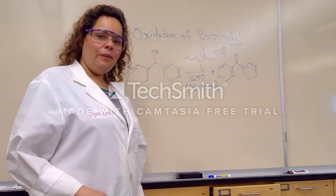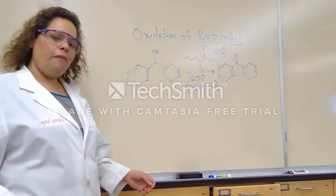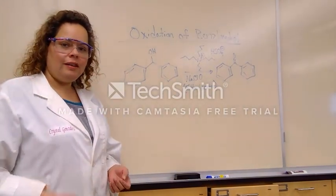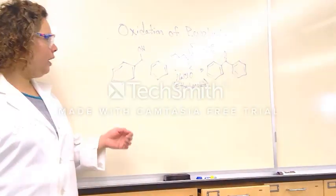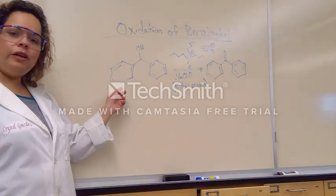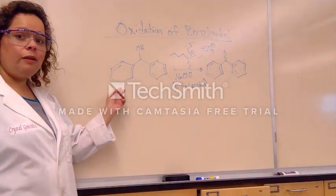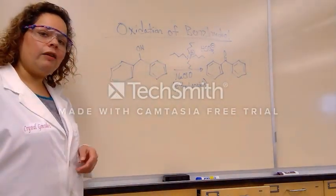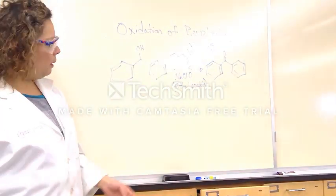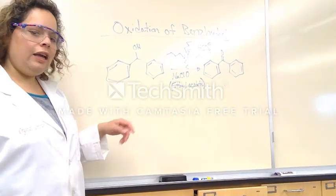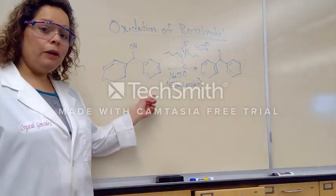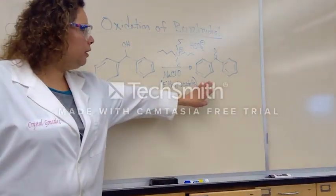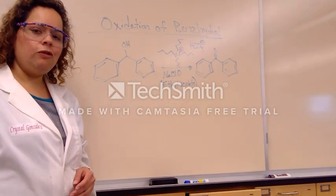Today we are looking at the oxidation of benzhydrol, which is the reverse reaction of what we did last time. We have the benzhydrol molecule that we synthesized in the previous reaction. We're going to use tetrabutyl ammonium hydrogen sulfate as our phase transfer catalyst, bleach as our oxidizing agent, ethyl acetate and water as solvents, and our product will be benzophenone, which is a ketone.